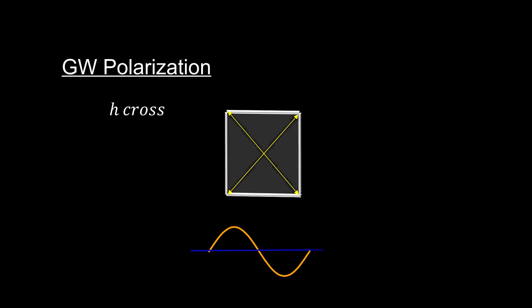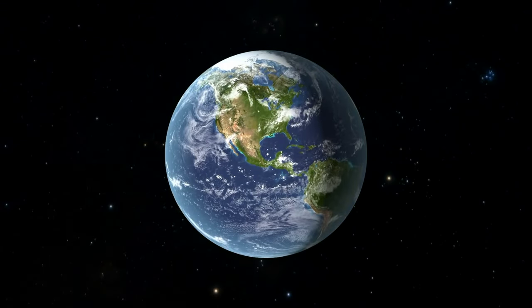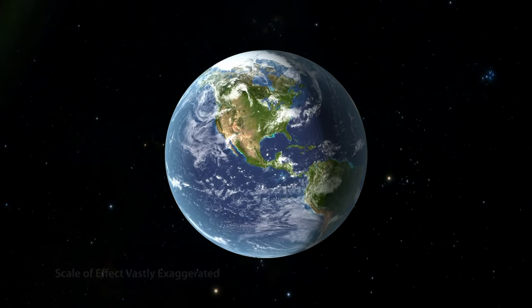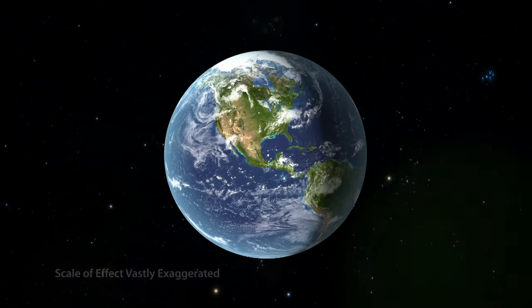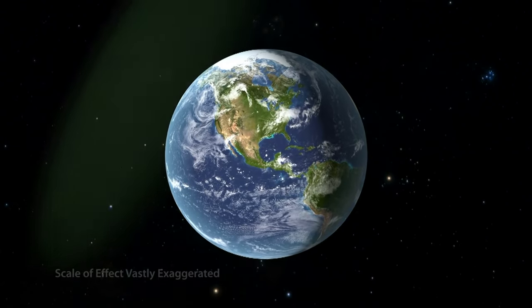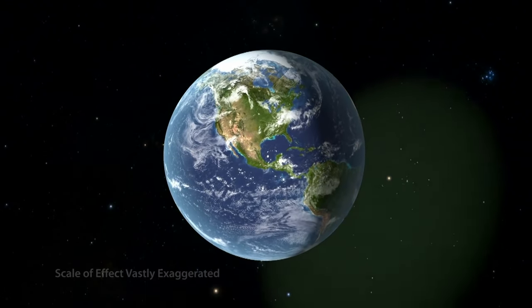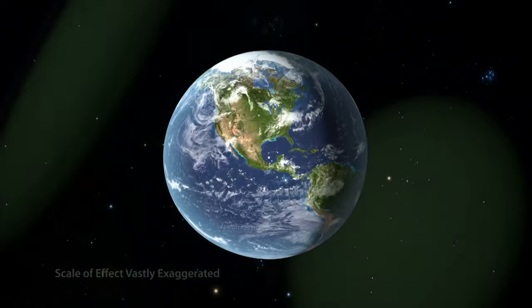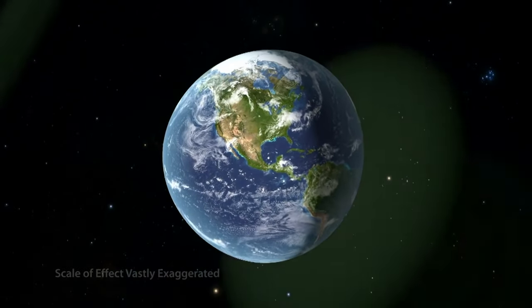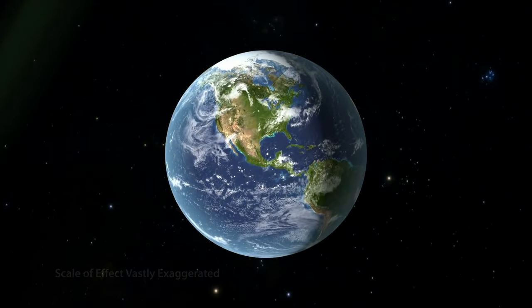When describing a gravitational wave, we can now be more precise than it's a ripple in spacetime. A gravitational wave is an oscillating polarized metric that operates in the plane perpendicular to the direction of the wave as it moves through space at the speed of light. And we have seen what this means for the objects that encounter such a wave. They are stretched and squeezed in various directions.